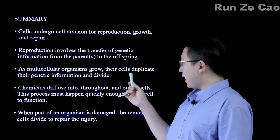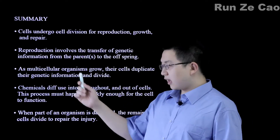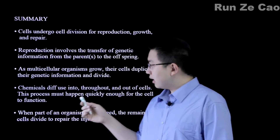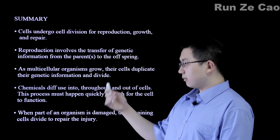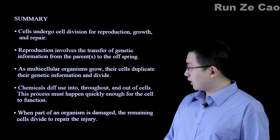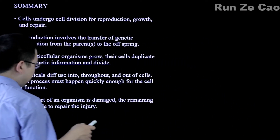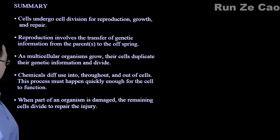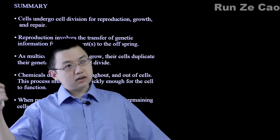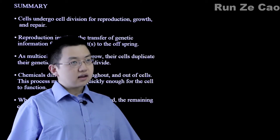Sometimes mistakes happen when duplicating genetic information. If these mistakes are not corrected, or if the cell doesn't commit suicide because the mistakes are too severe, the errors and mutations can accumulate, and the cell can eventually become cancerous. Chemicals diffuse into, throughout, and out of cells, and this process must happen quickly enough for the cell to function — so if a cell is too big, it takes way too long for chemicals to diffuse across, and thus it can't stay alive.